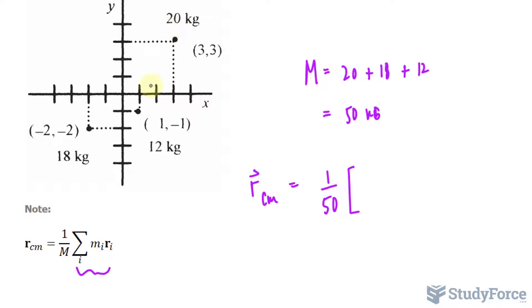and we take the mass for each individual particle, this one being 20 kilograms. And we multiply it by the x and y components for each of these points. So for this point, positioned at 3 and 3, it can be written as 3 times the unit vector i plus 3 times the unit vector j. The unit vector i is for the horizontal axis and j is for the vertical axis.